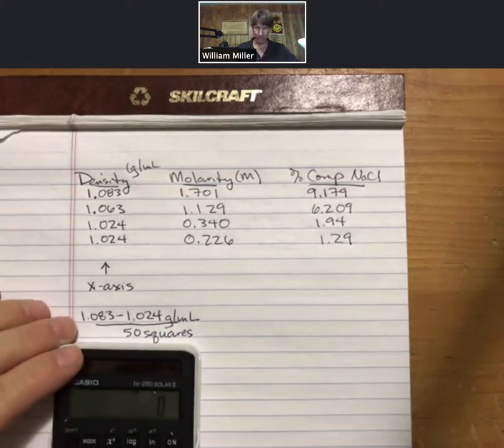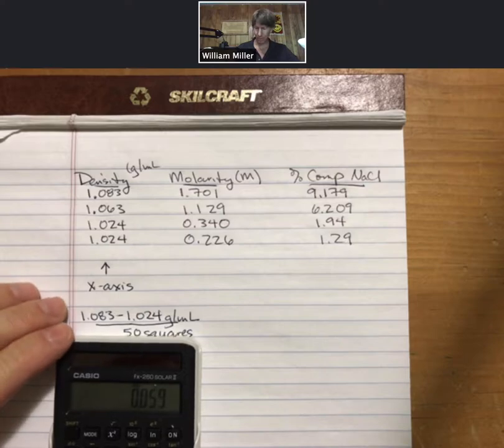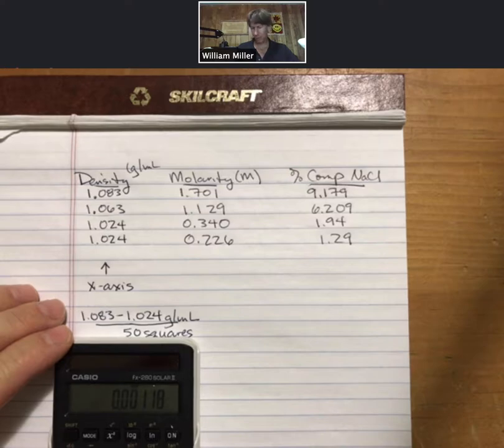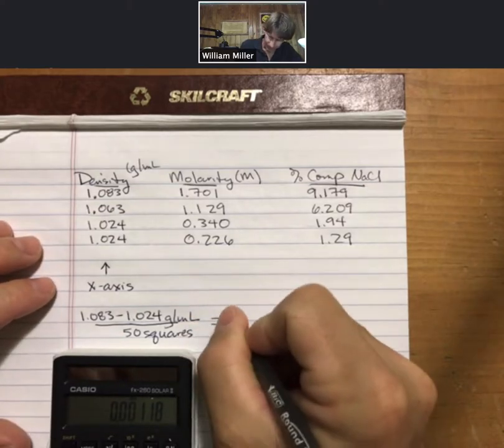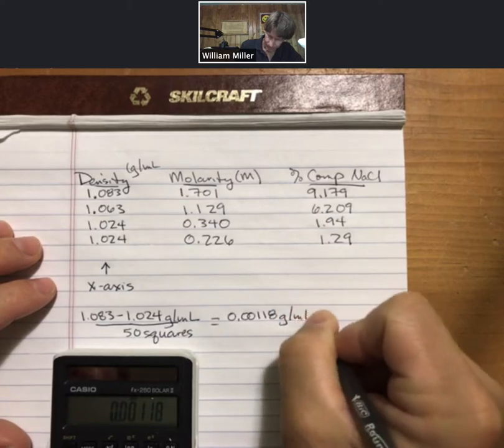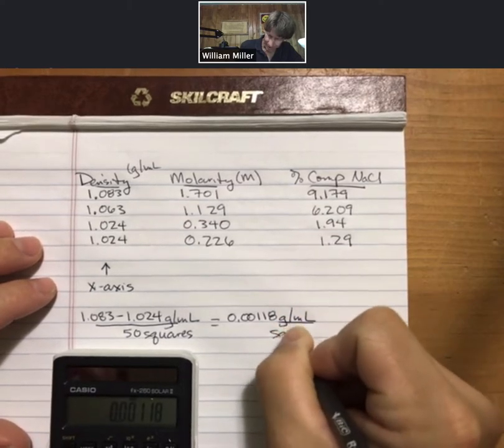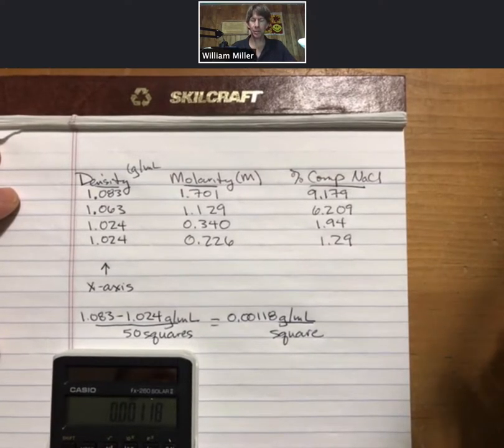So this will give us the size that will allow us to exactly plot those 50 squares on our 50 boxes. So looking at this, I do 1.083 minus 1.024 equals 0.059. Divide that by 50, and I get 0.00118. And so it's a slightly strange set of units, but we'll write them out. Grams per milliliter per square.